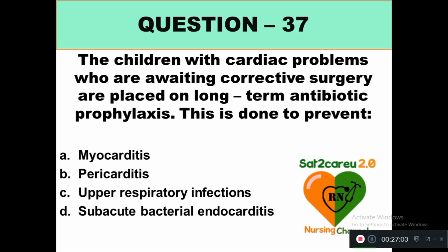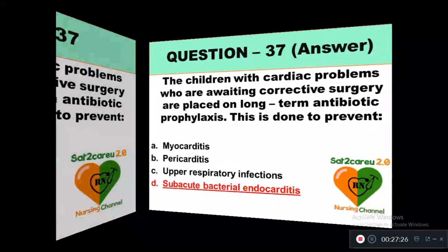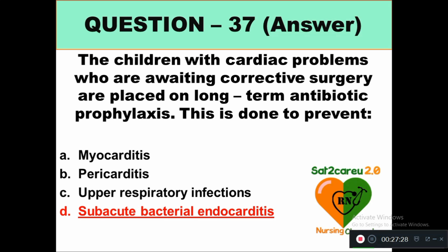Question 37: Children with cardiac problems who are awaiting corrective surgery are placed on long-term antibiotic prophylaxis. This is done to prevent: option A myocarditis, option B pericarditis, option C upper respiratory infection, option D subacute bacterial endocarditis. The correct answer is option D — subacute bacterial endocarditis.